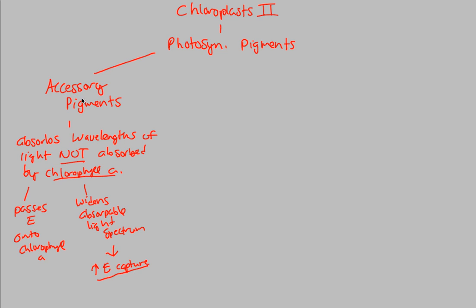Let's put some names to this face of an accessory pigment. Chlorophyll A's accessory pigment cousin is Chlorophyll B. Chlorophyll B is only different because instead of having a methyl group, it has a carbonyl group — C double bond O, which is a carbonyl group, either aldehyde or ketone. Specifically, Chlorophyll B helps out because it actually absorbs yellow and green light — yellowish green, let's imagine. Remember, Chlorophyll A absorbed bright green light; this is yellowish and green.